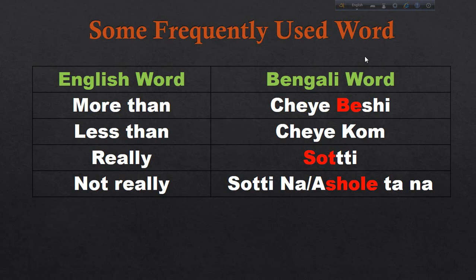We use 'less than' or 'more than' when we differentiate between two words, two things, or something. Basically, when we compare something, we use these types of words. So 'more than' means 'che beshi' and 'less than' means 'che kom'. 'Really' means 'shotti'. 'Not really' means 'shotti na' or 'asholy ta na'.